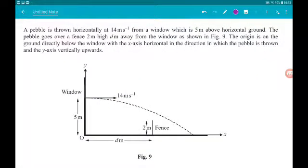Question 9 looks like the start of the big questions, 10 marks altogether. The pebble is thrown horizontally at 14 metres per second from a window which is 5 metres above horizontal ground.